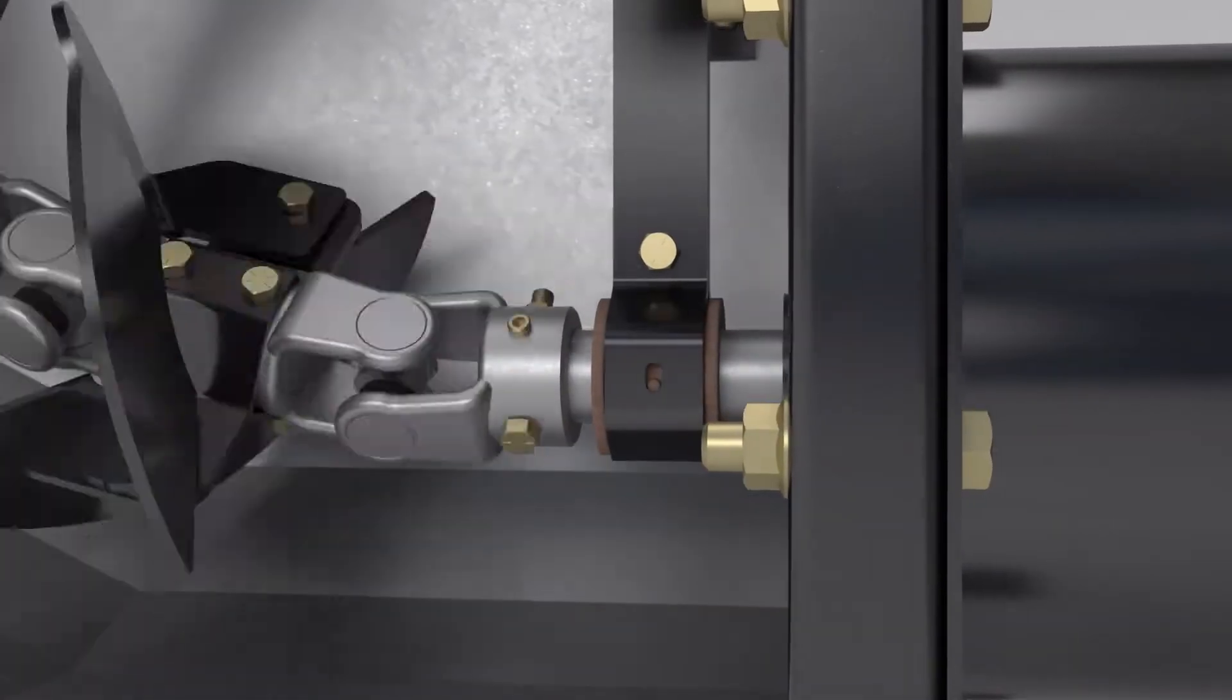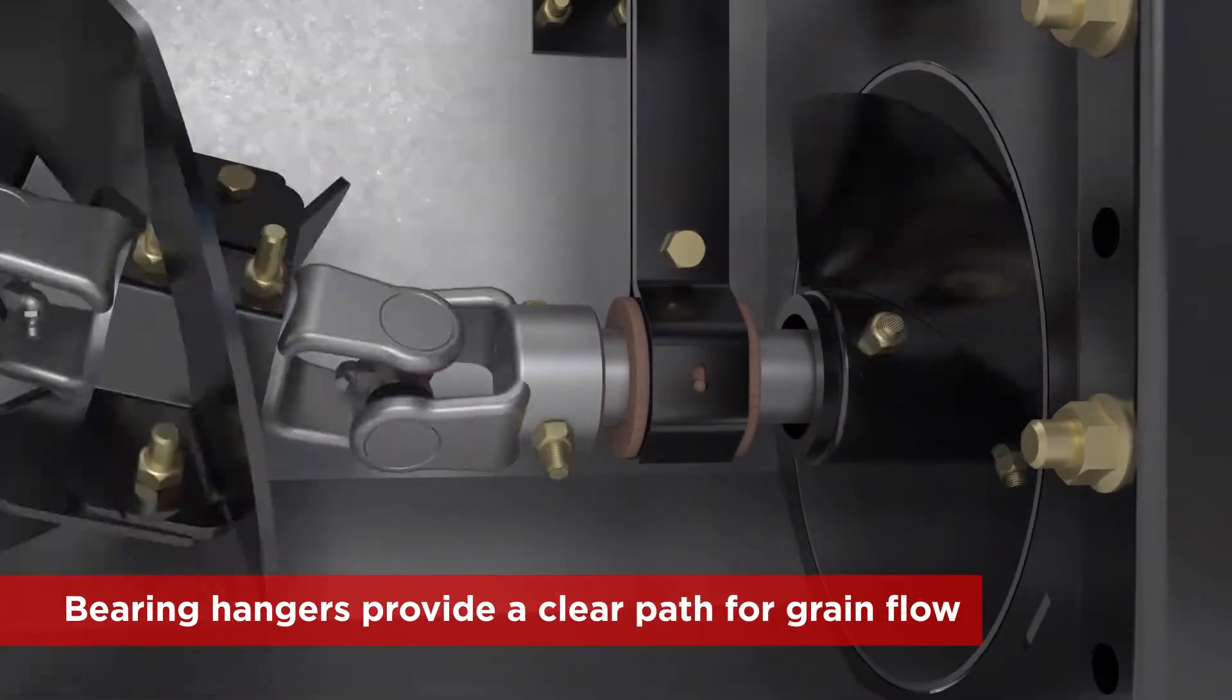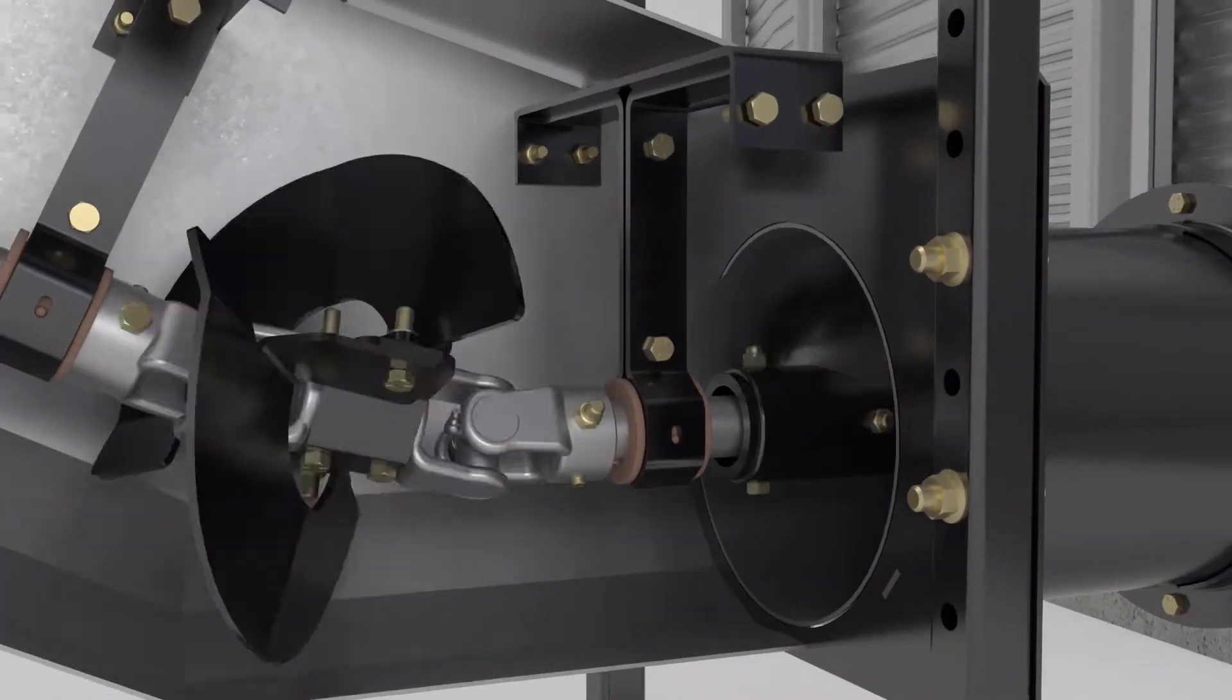Bearing hangers suspended from the top of the trough also clear the way for better grain flow. They are easy to access and improve serviceability.